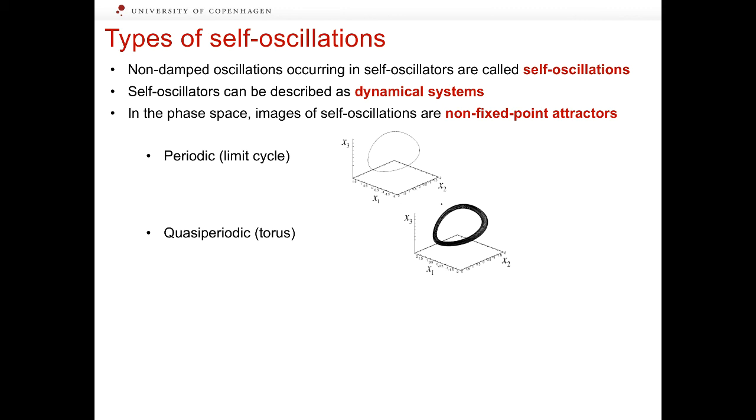If oscillations are not strictly periodic and not chaotic either, if they combine two or more time scales of oscillations, their image is an invariant torus. Deterministically chaotic oscillations are represented as strange attractors.